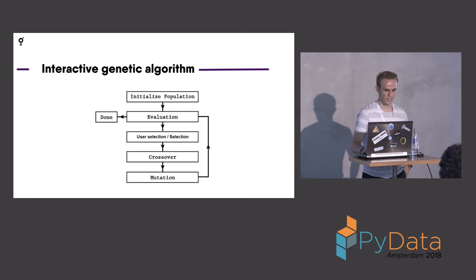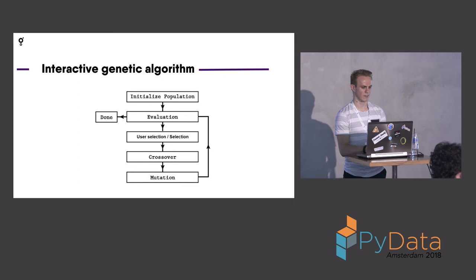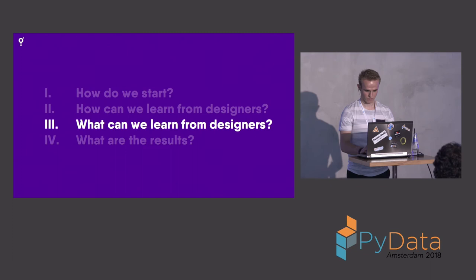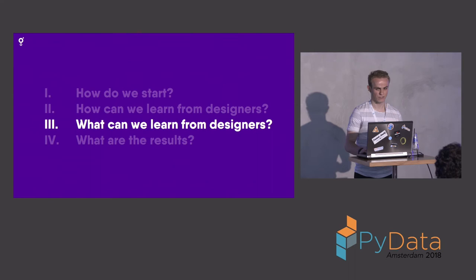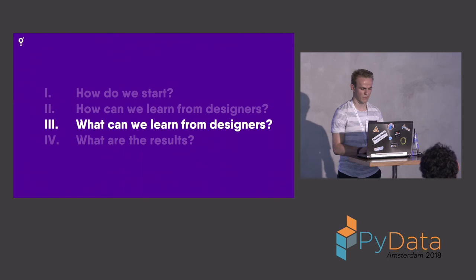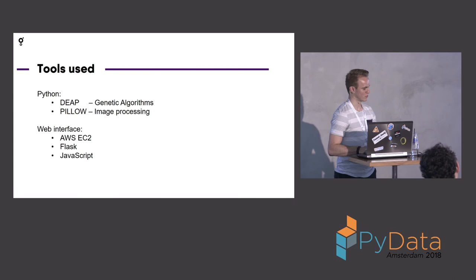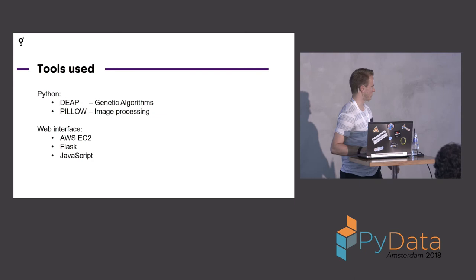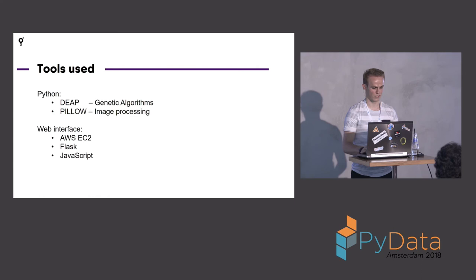An interactive genetic algorithm is basically the same as a normal genetic algorithm, but the selection is not done by some predefined rule — it's user selection. You do this for example 100 times, and every 10th generation you let a designer select the compositions that move to the next generation. The solution was implemented in Python using DEAP. The genetic algorithms were implemented there, and Pillow was used for image processing. We made a web interface running on an AWS EC2 instance using Flask and JavaScript.